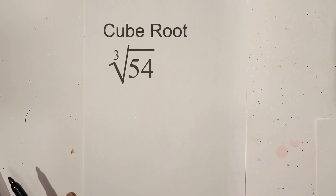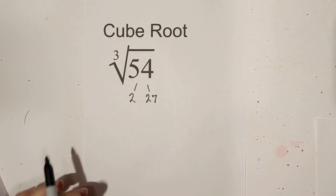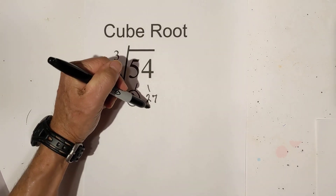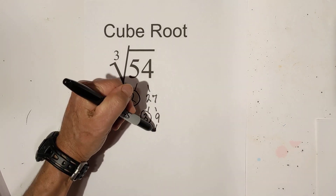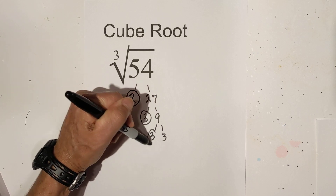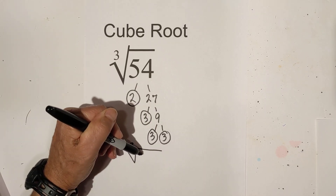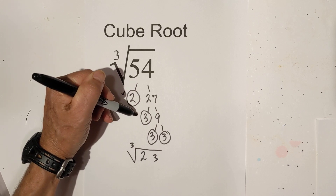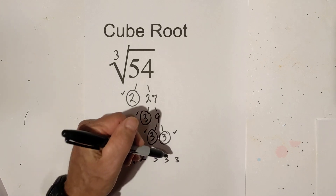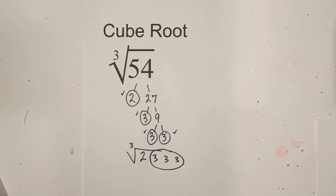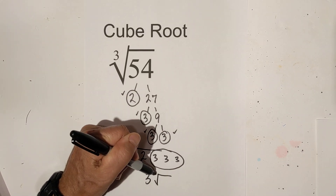How about the cube root of 54? I'm going to begin a factor tree. 2 times 27. Circle the 2 because it is prime. And now 27 is 3 times 9. Circle the 3 because it is prime. And then 3 times 3. So I'm going to rewrite them under the cube root, and that gives me 2, 3, 3, and 3. Remember, since we have a cube root, we can pull out triplets. So pulling out the triplets, it is now 3 cube root 2.